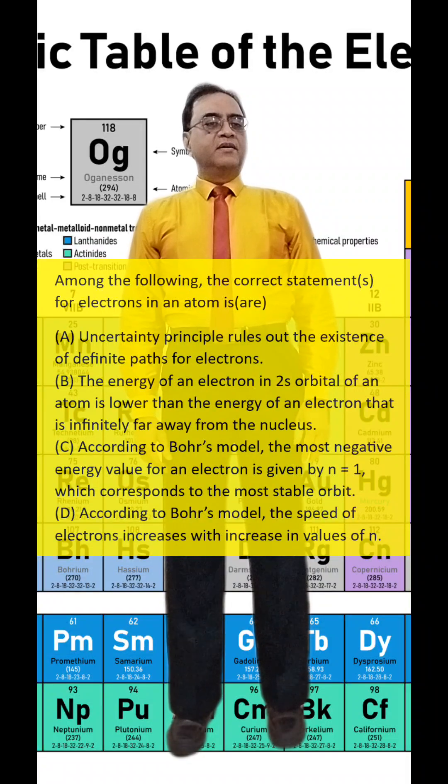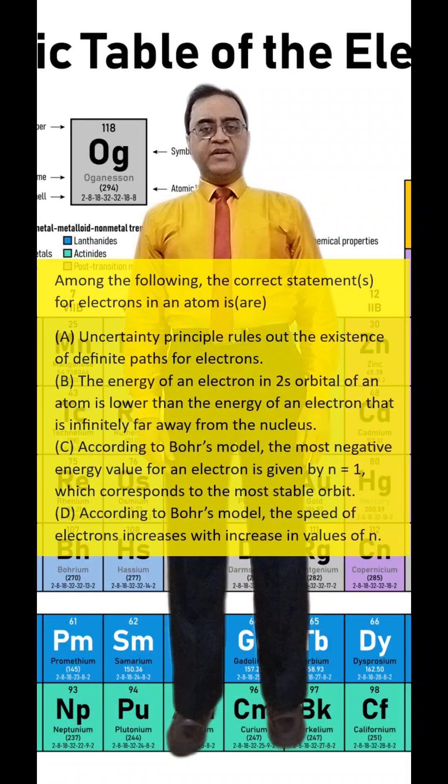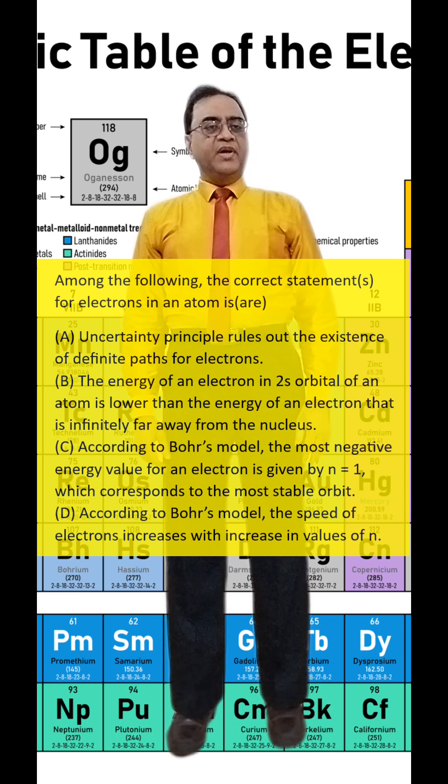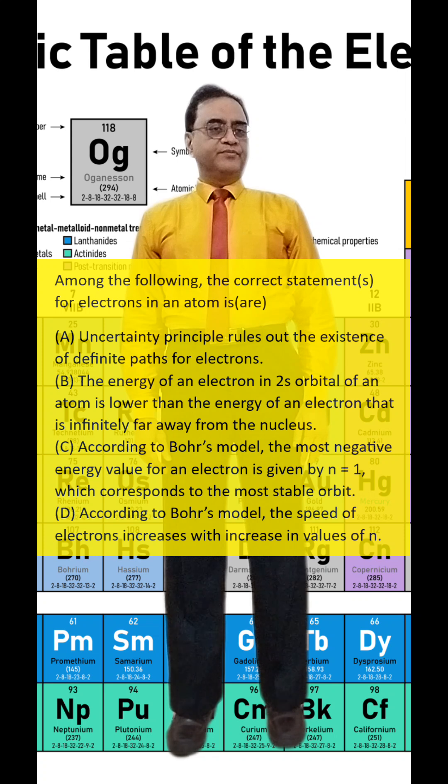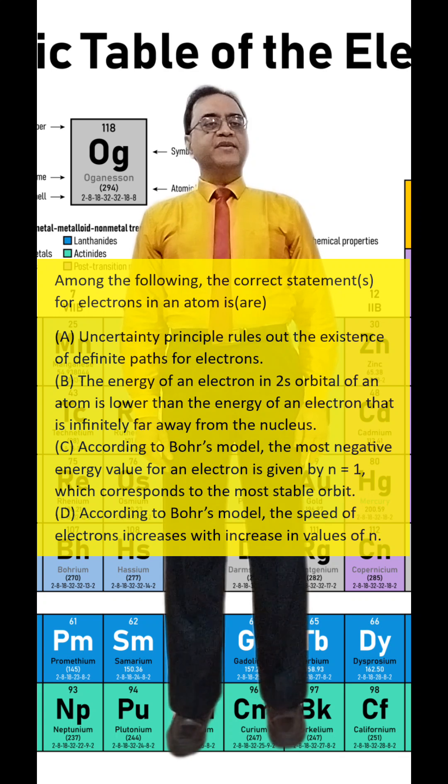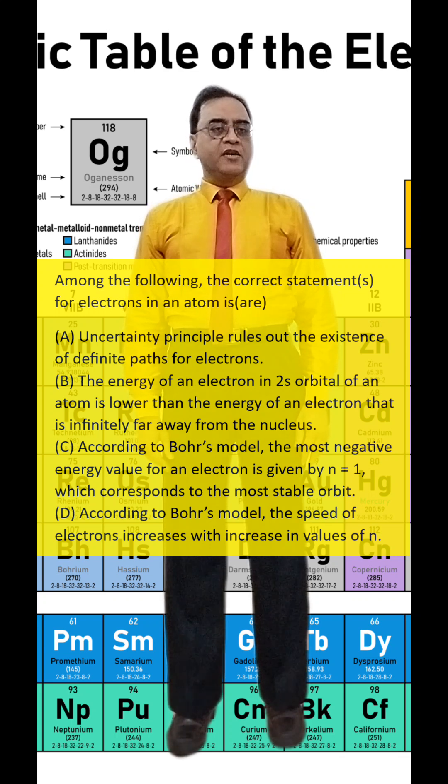Among the following, the correct statement or statements for electrons in an atom is or are A. Uncertainty principle rules out the existence of definite paths for electrons.